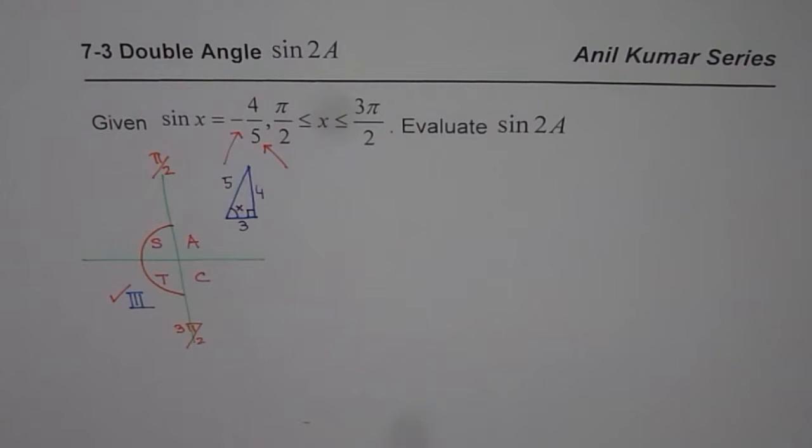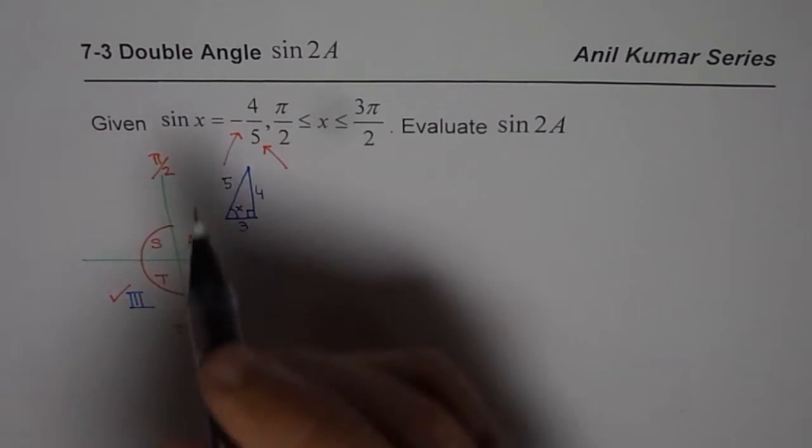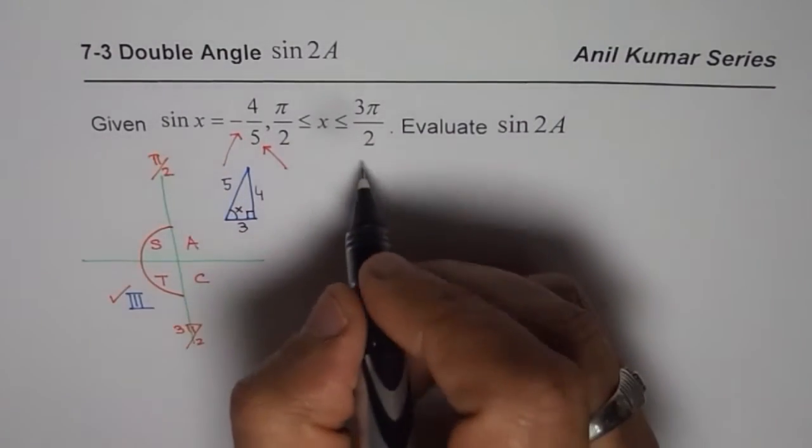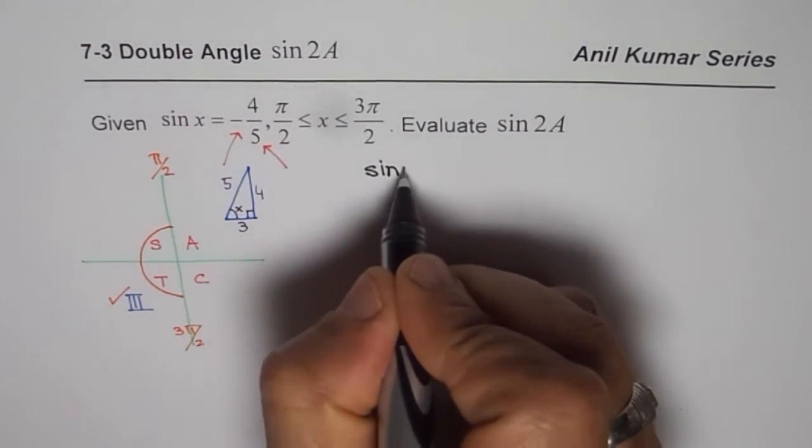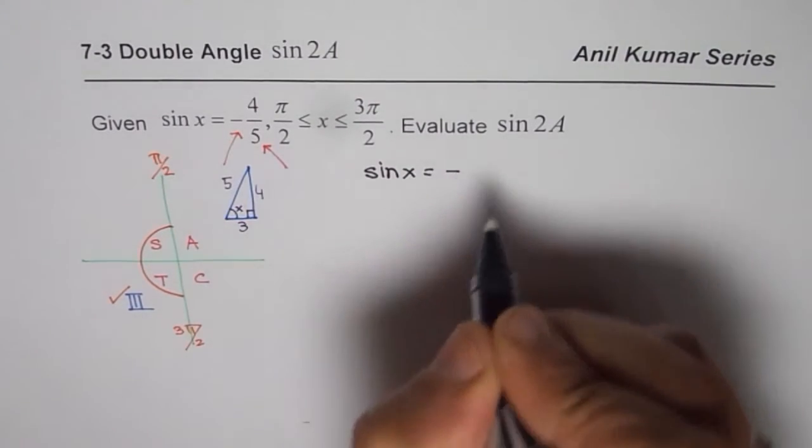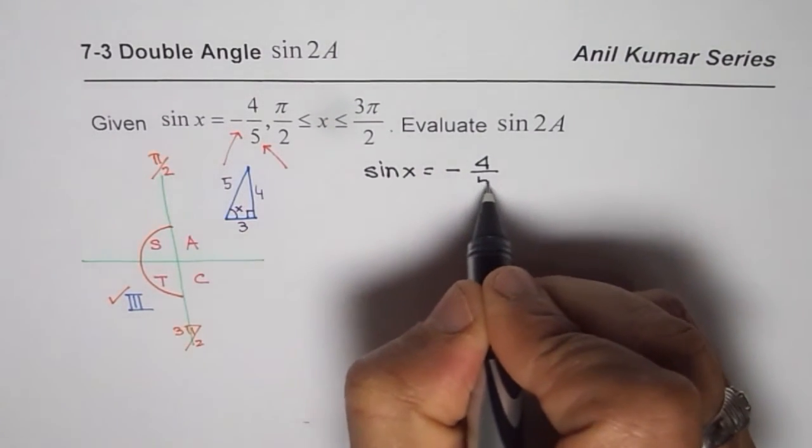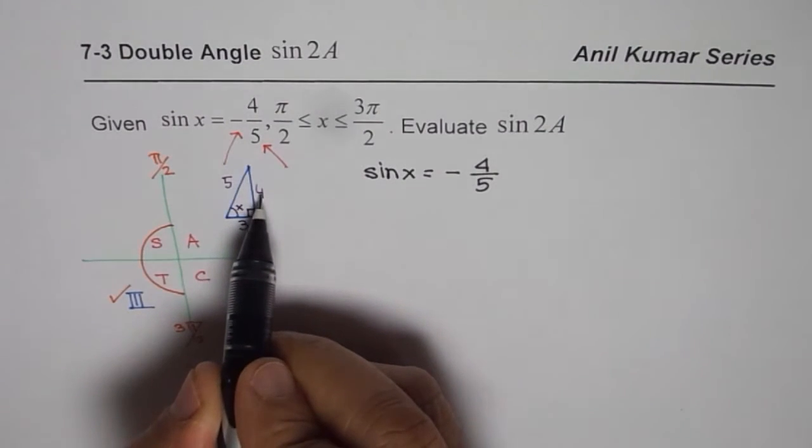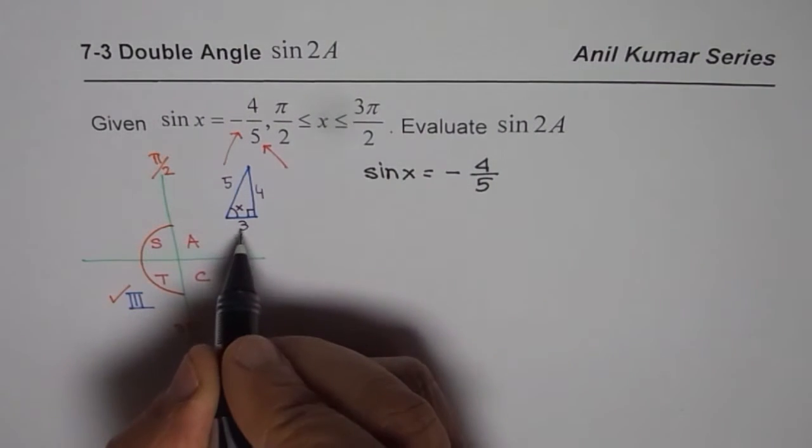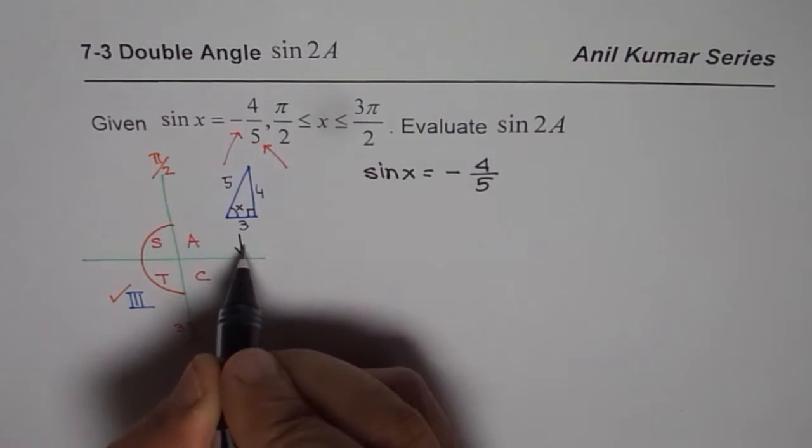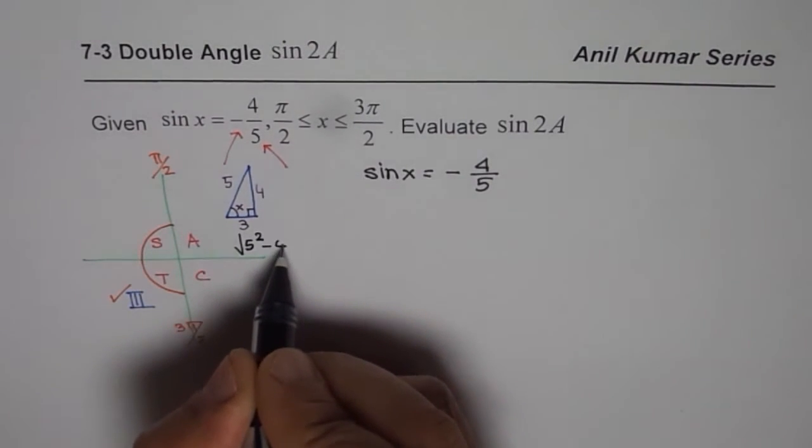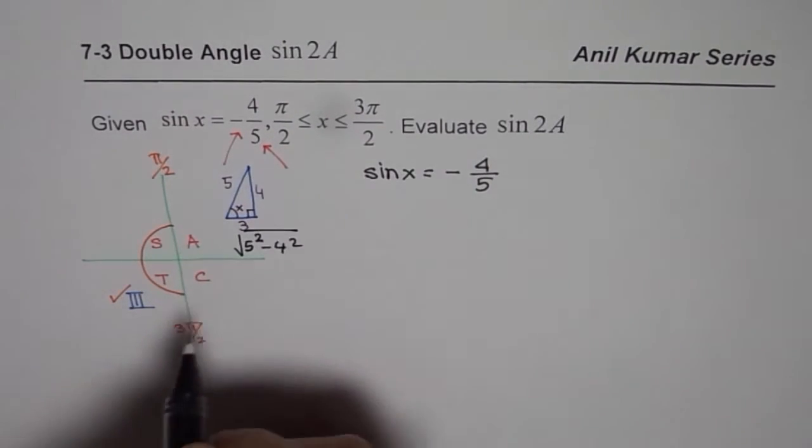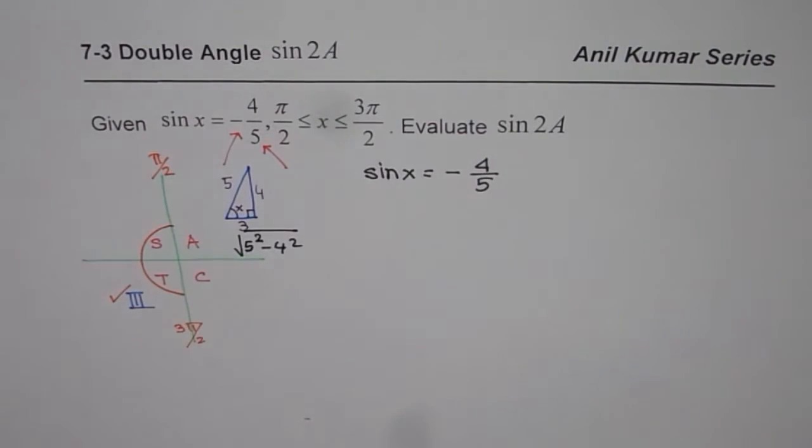So that is how we should look at the given value. Now let us solve this question. As I was saying, sine x is given to us as negative 4 over 5. So that gave us this triangle with opposite side being 4, hypotenuse being 5. You can find the other side which is basically square root of 5 squared minus 4 squared, and that equals 3.